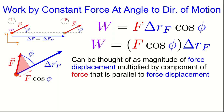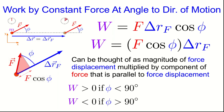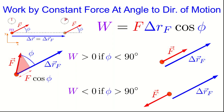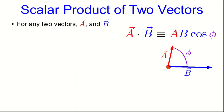Both F and delta r_f are magnitudes and therefore positive, so the sign of the work is determined entirely by the angle phi. If phi is acute — less than 90 degrees — the work is positive. If the angle is greater than 90 degrees, the work is negative. This agrees with what we've already seen: if the force is in the same direction as delta r_f (phi = 0), we get positive work; if the force is in the opposite direction, we get negative work.